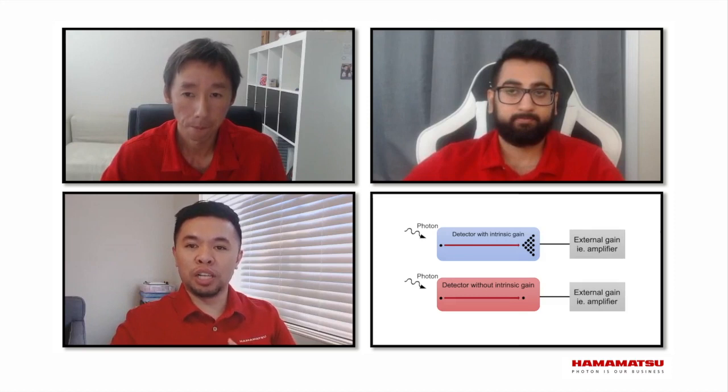When we say detector with gain, we're referring to a specific type of gain which is the intrinsic or internal gain of the photo detector. For example, a photodiode is a detector without gain. When a photon is detected, it's only converted to one electron. A detector with gain means the photon is converted to an electron, then the electron is multiplied within the detector, so one photon results in many electrons.